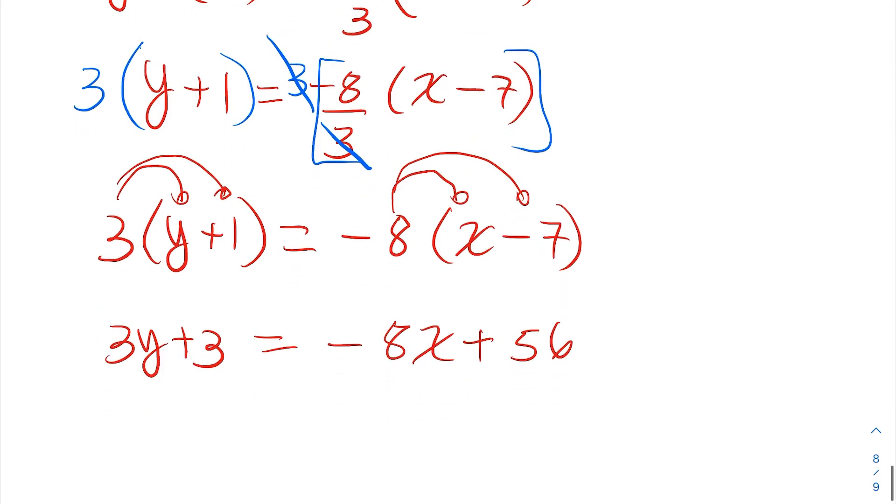Then I need to put everything that has an x or y on the left side. I can accomplish that by adding 8x to both sides. On the left, I get 8x plus 3y plus 3. On the right, the 8x's cancel and I just get 56.